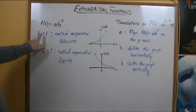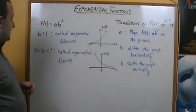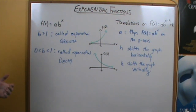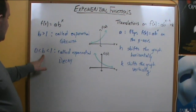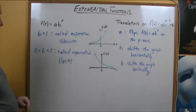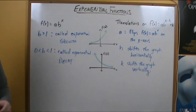If our value of b is greater than 1, that's going to be an exponential growth function. And if our value of b is a fraction between 0 and 1, that's going to be called exponential decay.